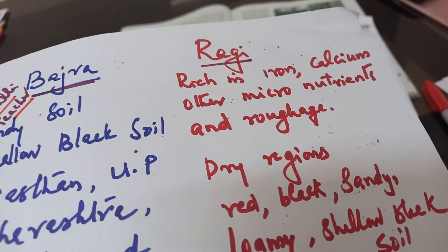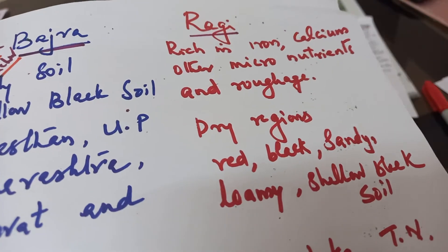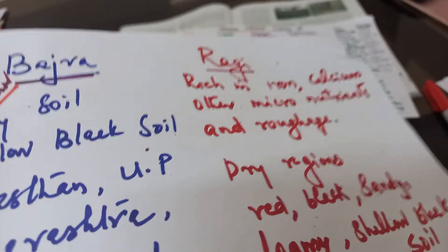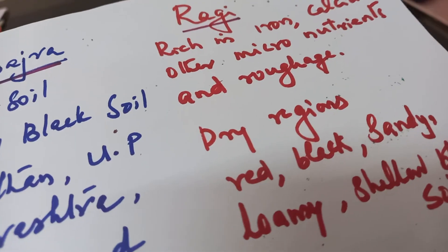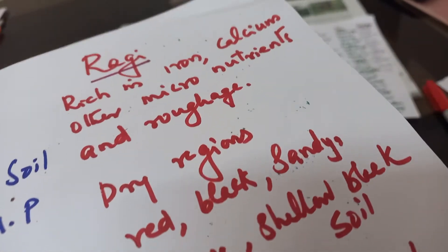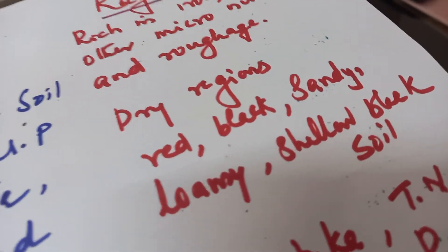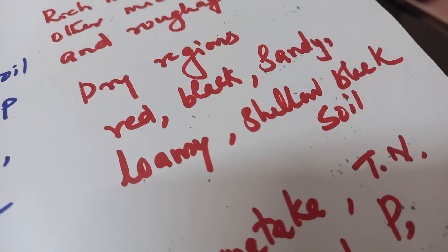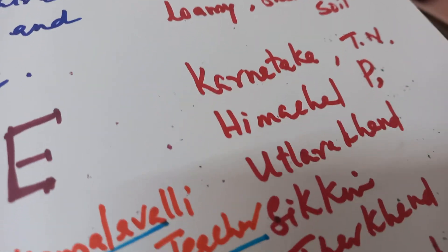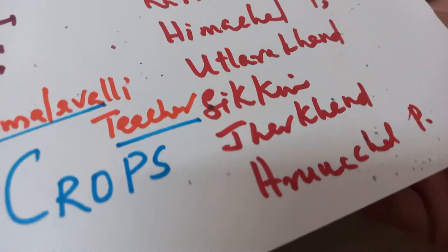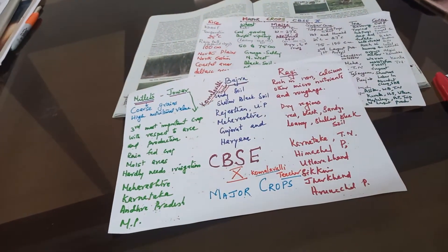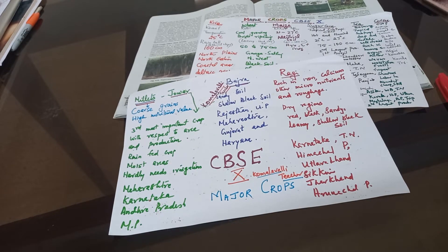Then comes Ragi. It is rich in minerals and other micronutrients and roughage. It is grown in dry regions in red, black, sandy, loamy, and shallow black soil — it can be cultivated in all these soil types. Major growing areas for Ragi are Karnataka, Tamil Nadu, Himachal Pradesh, Uttarakhand, Sikkim, Jharkhand, and Arunachal Pradesh.